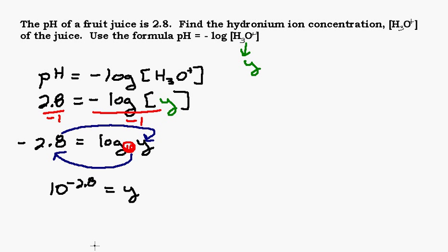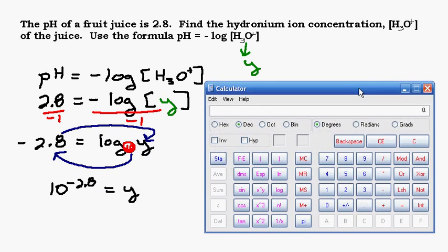Well, we pretty much have this solved, right? We've got Y by itself. Y equals 10 to the negative 2.8. And that's a good answer, that's our value. But it's not the best answer because we have something to a decimal power, and that's not really the best way to write it. So what we're going to do is we're going to write it in scientific notation, and we're going to use our calculator to help us.